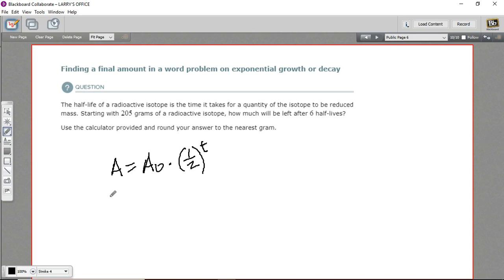Here we have a problem about half-life. So this is an exponential decay. Half-life is this property of radioactive substances where the substance like uranium or plutonium is constantly breaking down into something else.